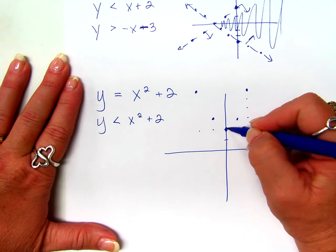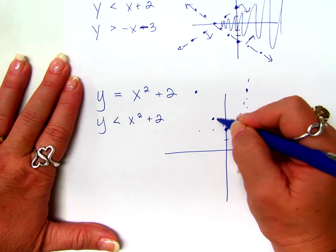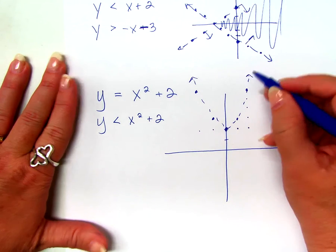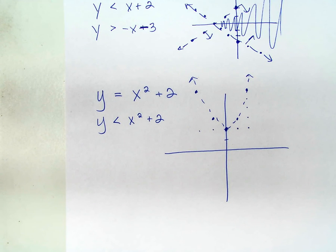But what kind of parabola do I draw? A dotted. And here's the problem, guys. There's not an above and a below anymore. What is there? Inside. Inside and outside. So, we have to figure out if I should shade inside or outside.